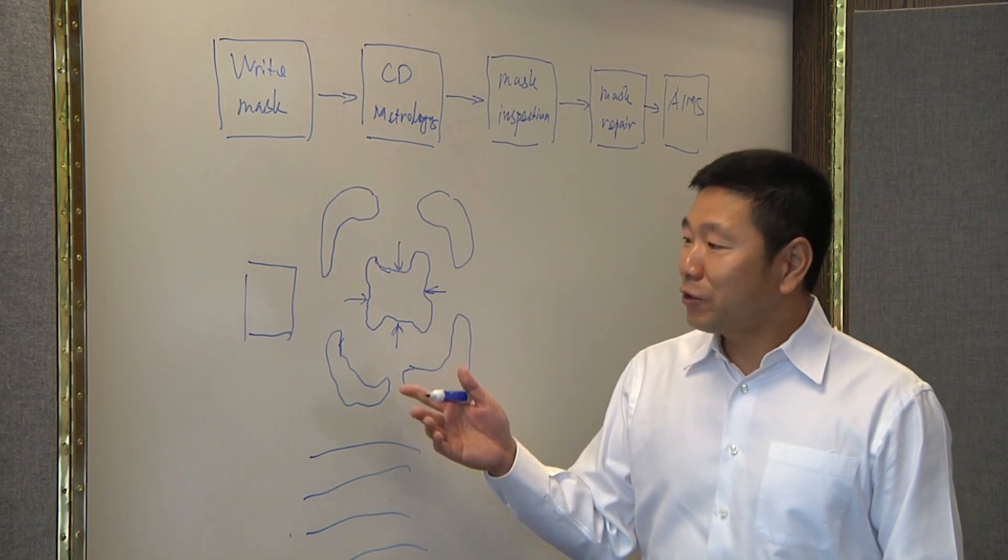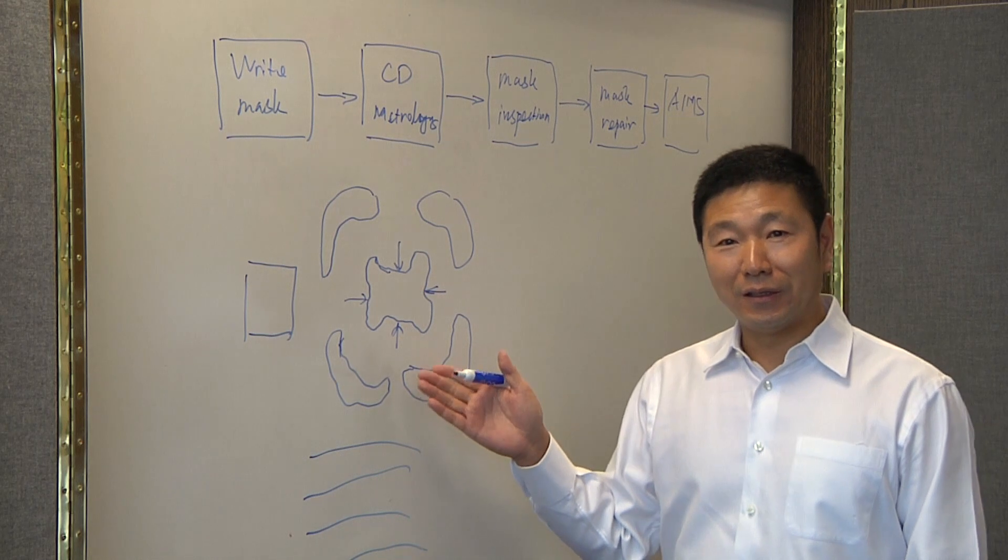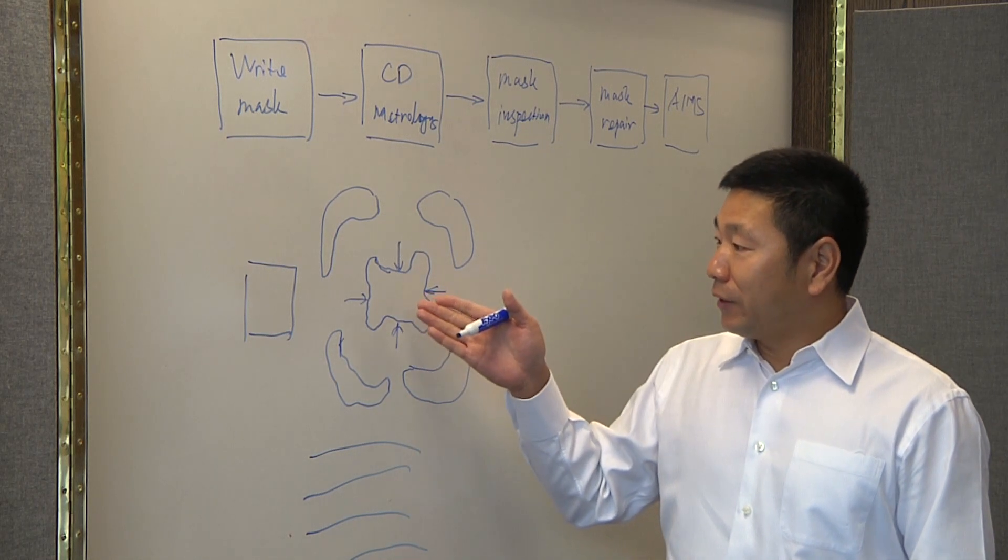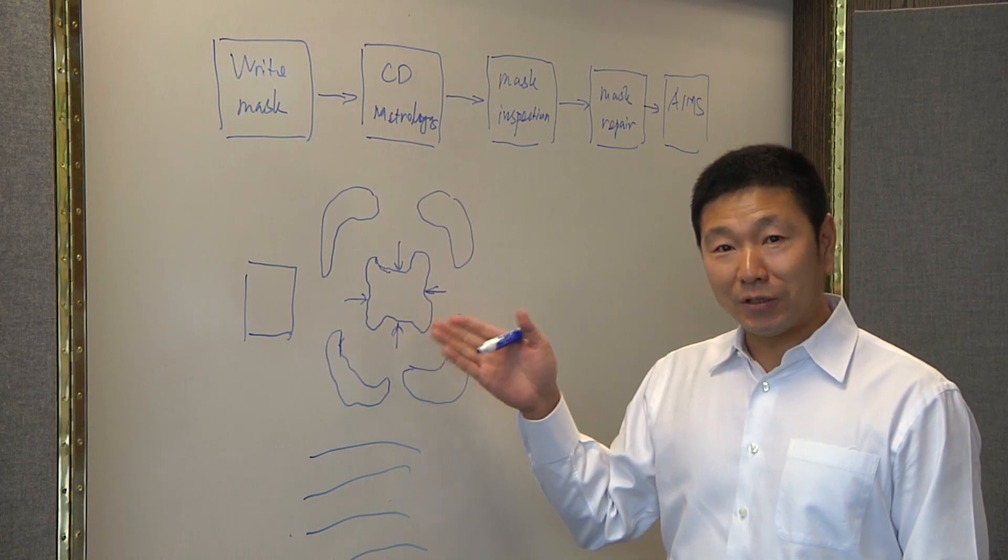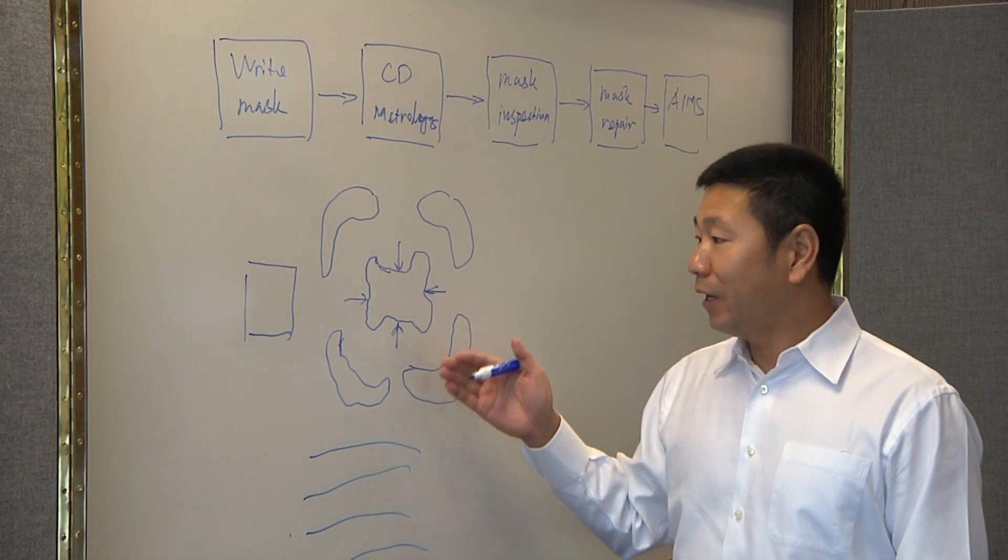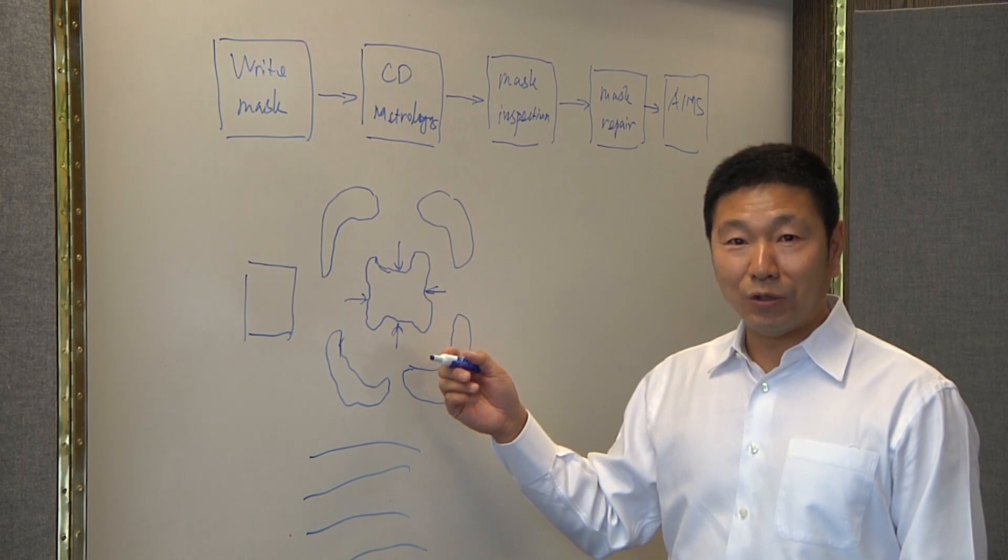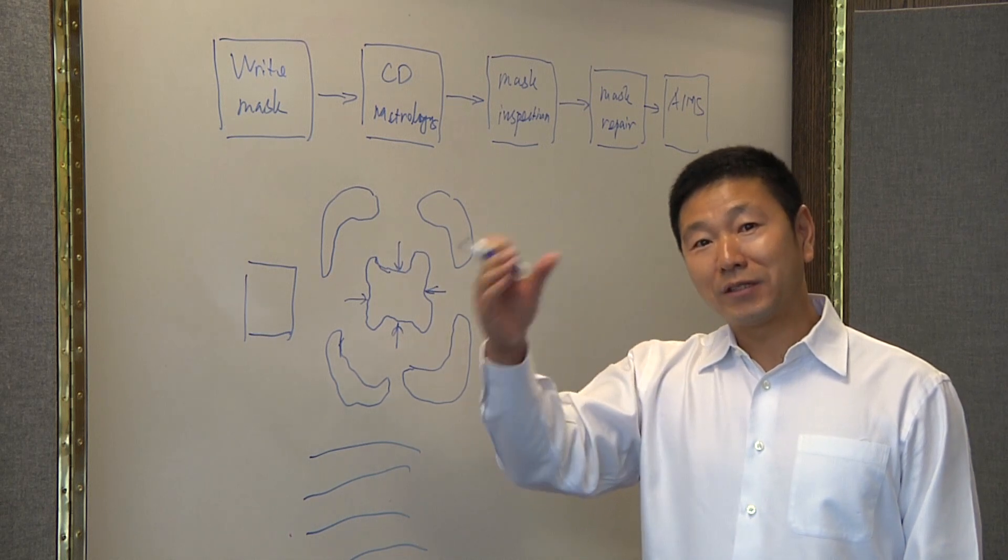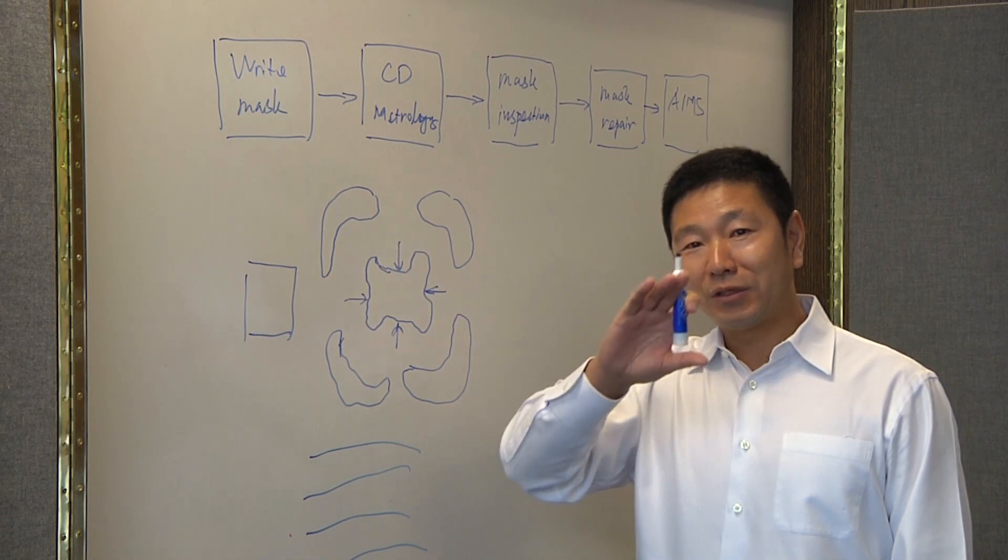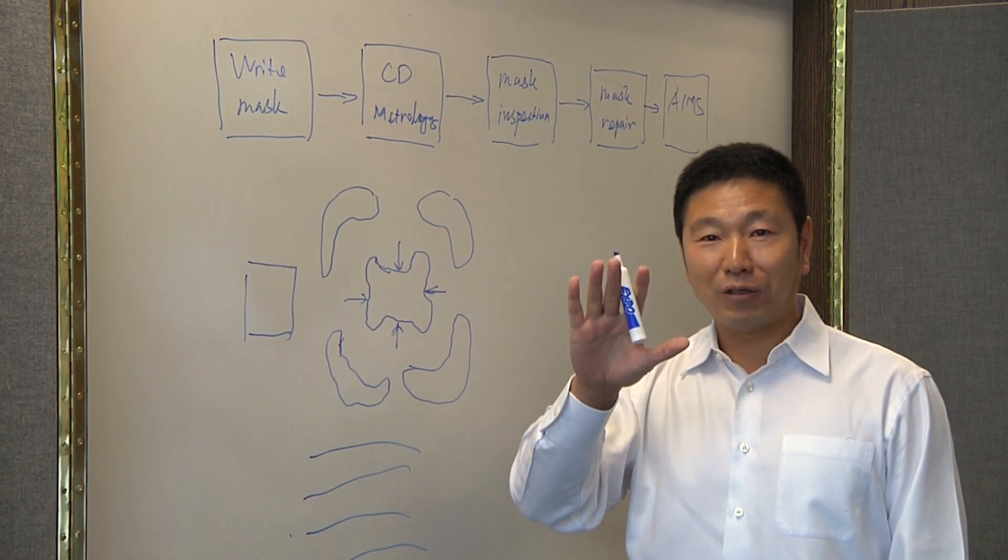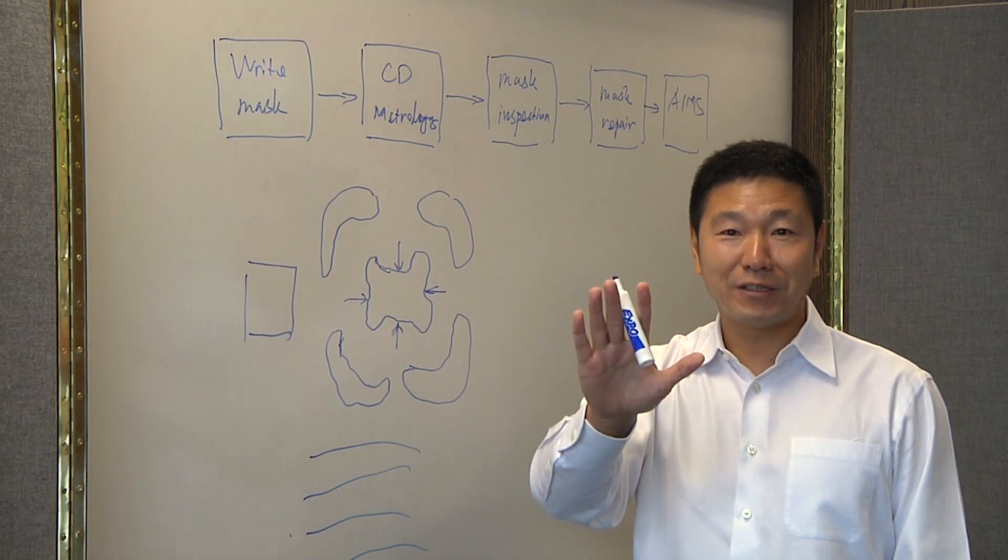Does this actually improve the throughput in the foundry and the mask shop? Or are we starting to deal with so many different things that we're starting to slow down everywhere? Well, this actually helps the wafer fab because CD-SEM is really fast. You can get a lot of measurements. Then you run the simulation. You get this global CD map, and then you can forward this to the scanner. The scanner can use this global CD map to do certain corrections so that you can get your wafer correct the first time.